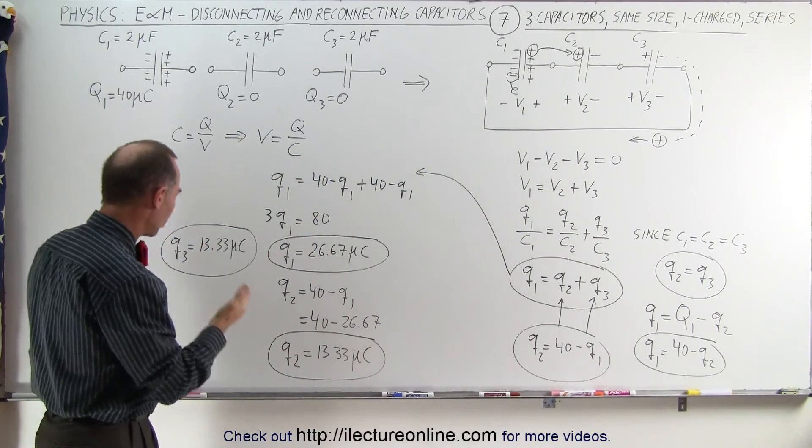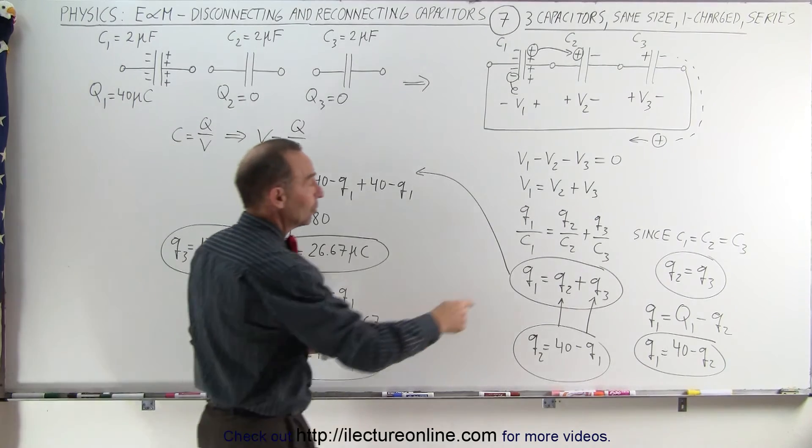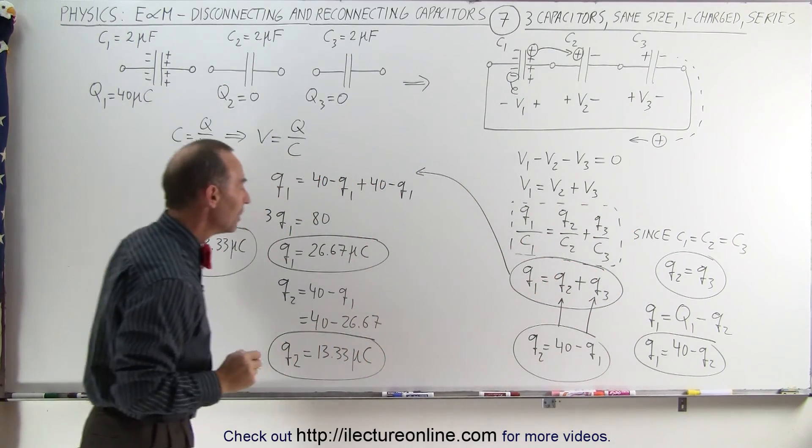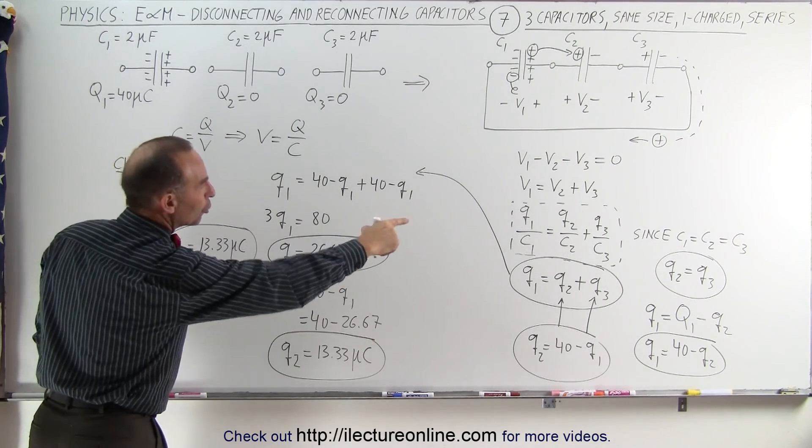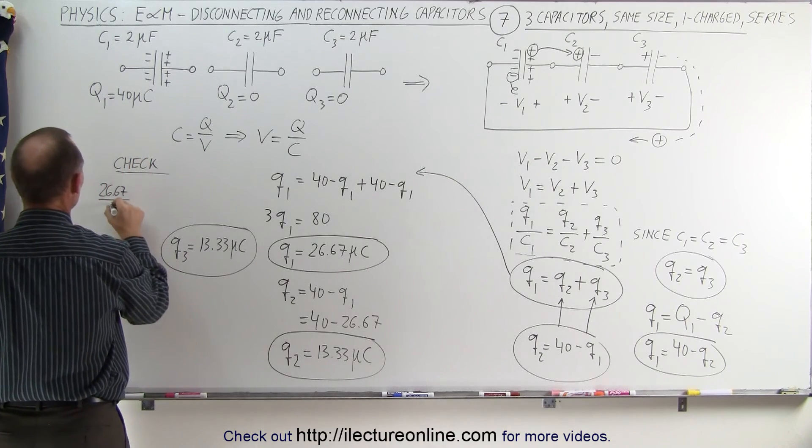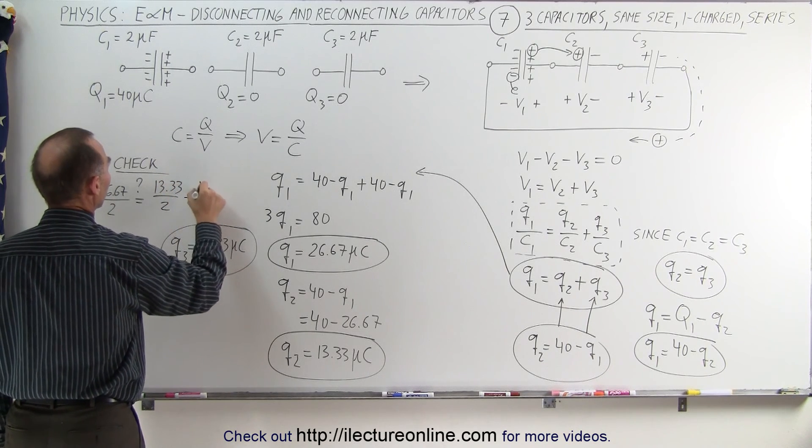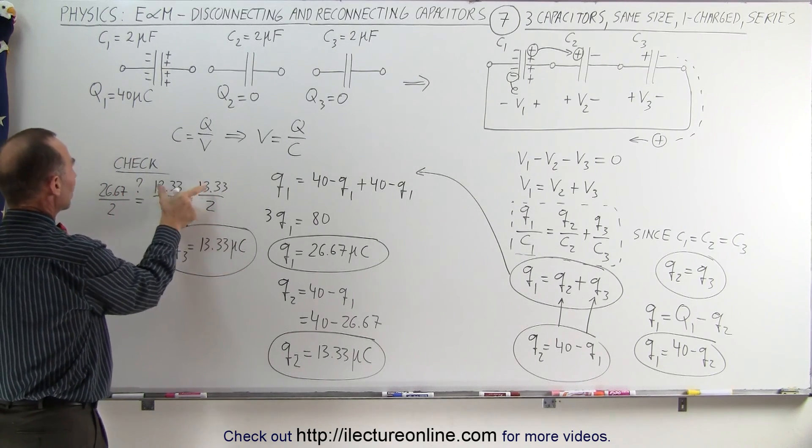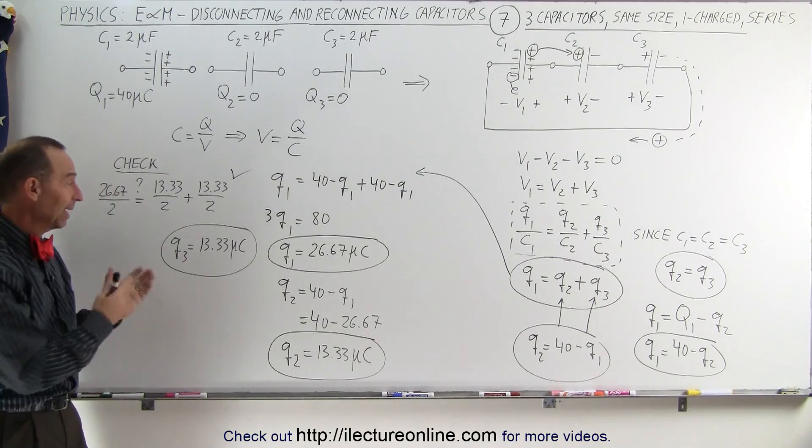Now, how do we check? How do we know for sure that this is correct? Because we know it should not add up to the 40 microcoulombs. Well, you can actually go back to this original equation and see if you plug in the numbers, will that indeed be correct? So that's what we call our check. When we check, we go Q1, which is 26.67 divided by C1, which is 2, is that equal to Q2, which is 13.33 divided by 2, plus 13.33 divided by 2 for Q3. When you look at that, you add this and this together, you get 26.67, and you can see that yes, indeed, that does give me the correct answer. And that's how we check.